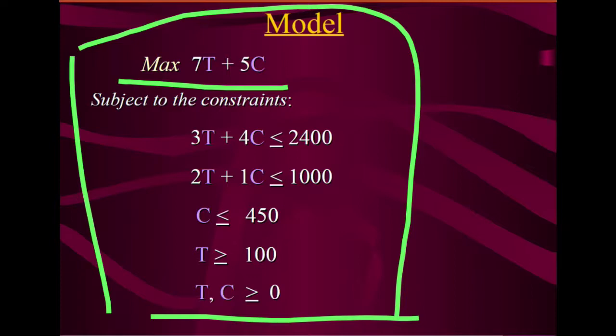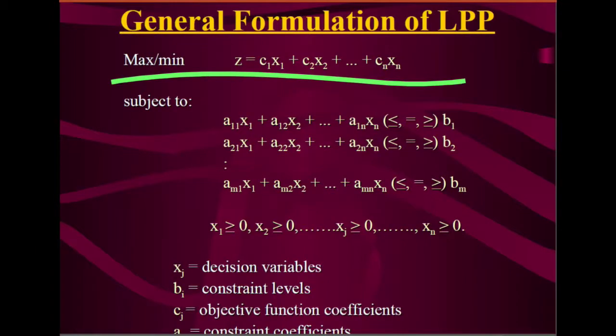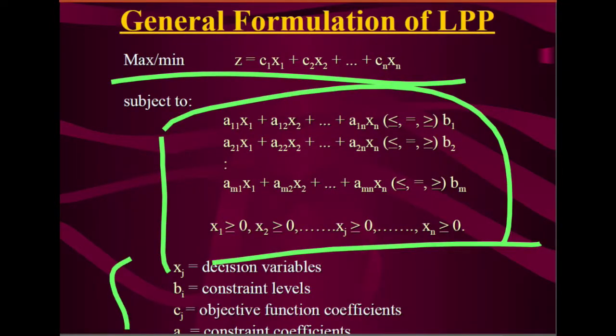This slide shows the general formulation of an LPP. You may have covered this in math classes. The key idea is: you have a maximization or minimization objective function, subject to constraints, with defined decision variables such as x, b, c, and j.